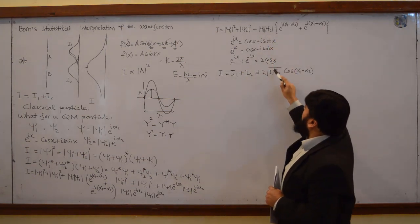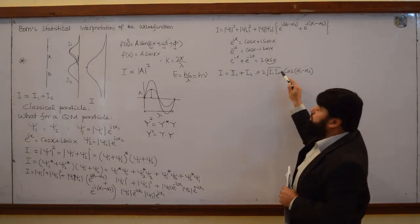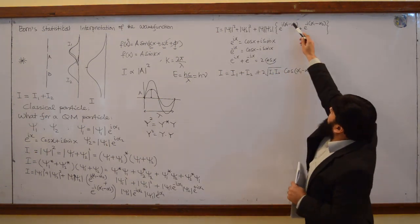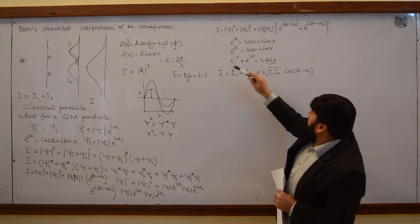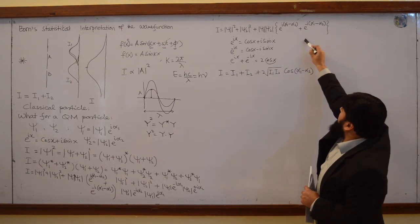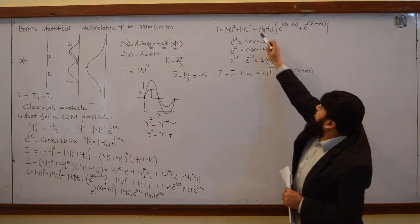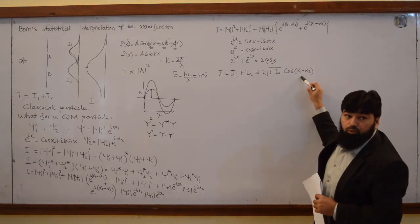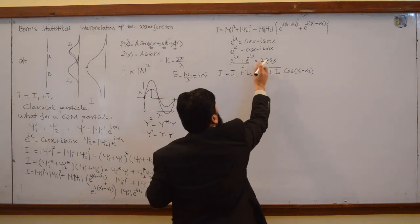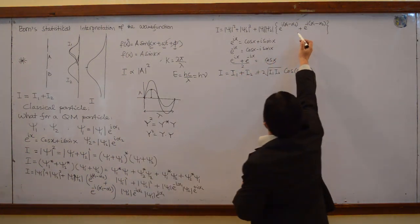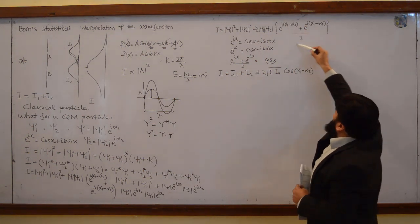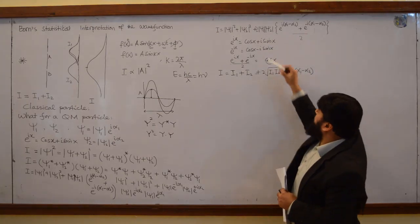ψ₁ is square root of i₁ and ψ₂ is square root of i₂, so I combined them under a square root. Here x is equal to alpha 1 minus alpha 2. Putting that in, the factor of 2 comes in here, so I divide by 2 this and multiply by 2 here — so this 2 comes in from the cosine relation, giving cos(alpha 1 minus alpha 2).